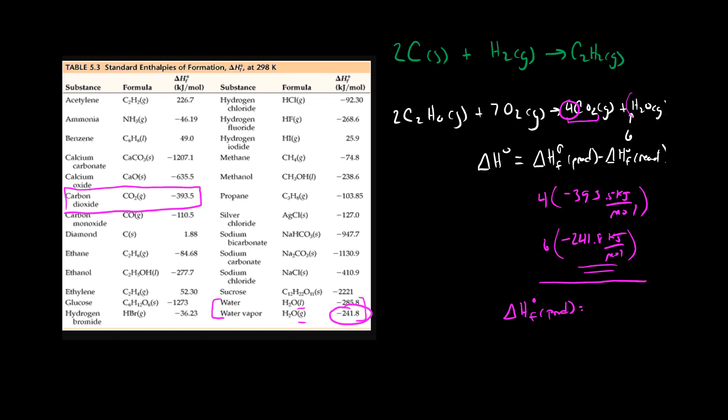So just use your calculator and you find out that this is negative 3024.8 kilojoules per mole. So this is the enthalpy of formation of our products from our equation here.